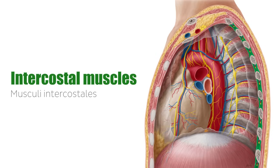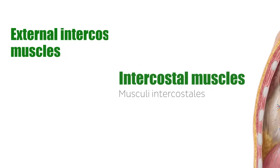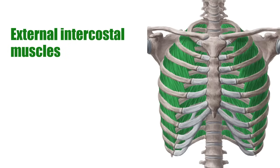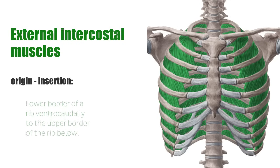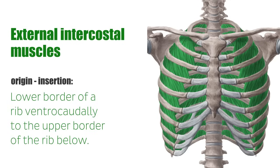The intercostal muscles are a group of intrinsic chest wall muscles occupying the intercostal spaces. The intercostal muscles consist of the external intercostal muscles, which course from the lower border of a rib ventrocaudally to the upper border of the rib below. Ventrally, they are bordered by the external thoracic fascia.